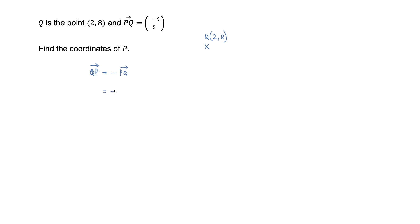That would be equal to negative (-4, 5). And that would be equal to, well, two negatives make a positive. So four and then we've got negative five here.